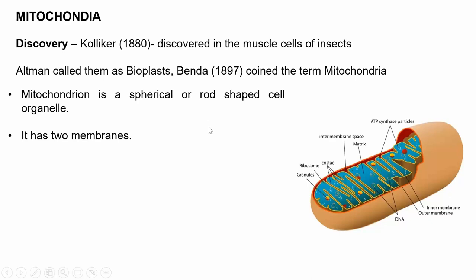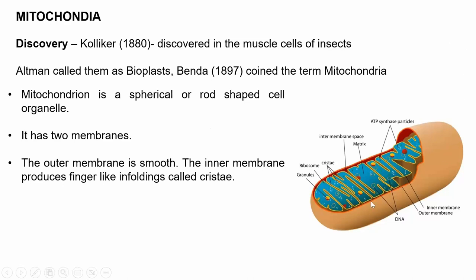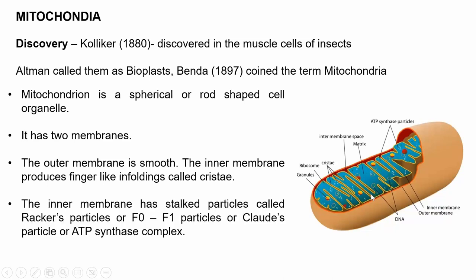Mitochondria has two membranes: the outer membrane and the inner membrane. The outer membrane is smooth, while the inner membrane has finger-like infoldings known as cristae. The inner membrane also has stalk particles, also known as Racker particles or F0-F1 particles, or ATP synthase particles. These particles help in oxidative phosphorylation, and mitochondria helps in aerobic respiration inside the cell.